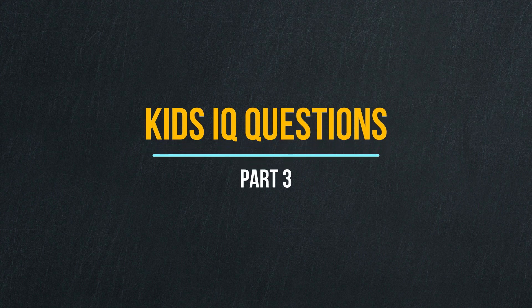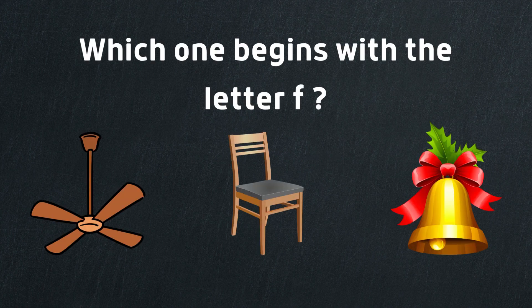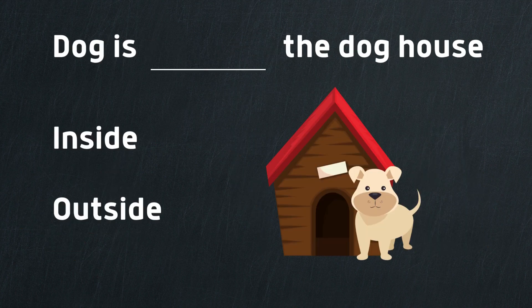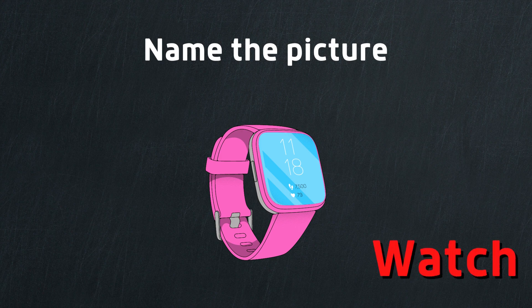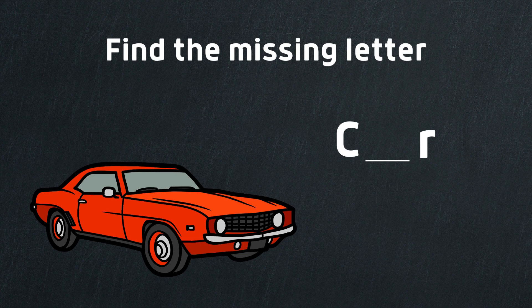Kids IQ questions part 3. Which one begins with the letter F? Yes, it is fan. Dog is dash the dog house — dog is outside the dog house. Name the picture. It's a watch. Find the missing letter.